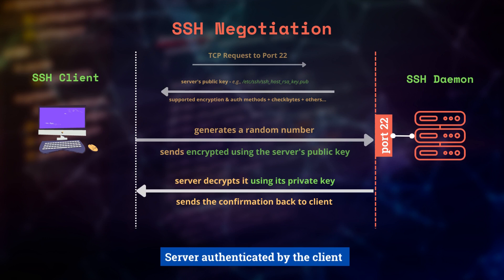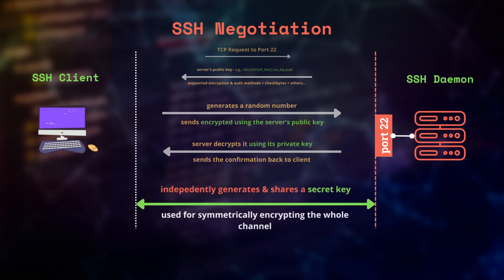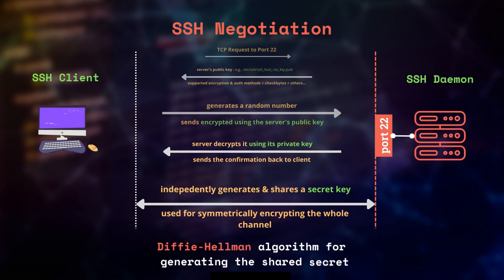So, the server authentication part is complete. Meanwhile, both the server and the client agree upon a symmetric key as well. This shared key is calculated independently, but its value will be the same. For more information on how it works, you can check out the Diffie-Hellman key exchange algorithm.